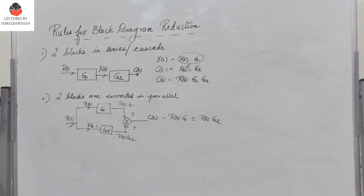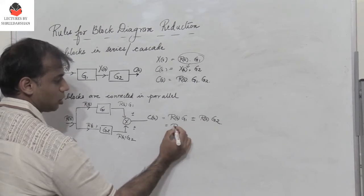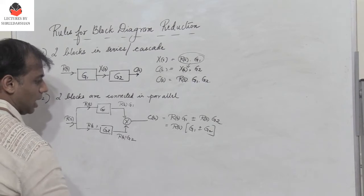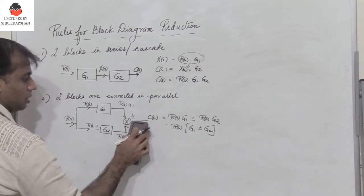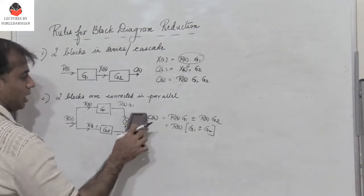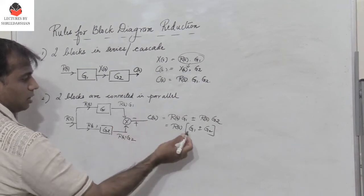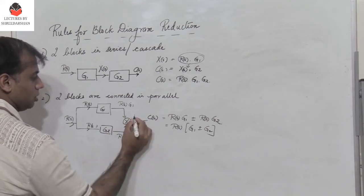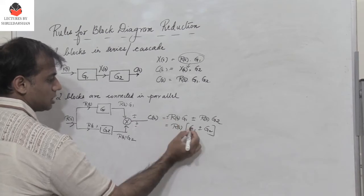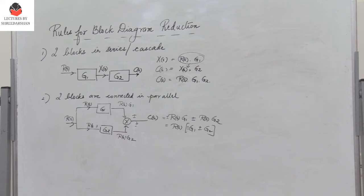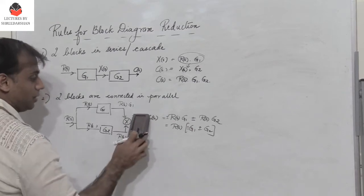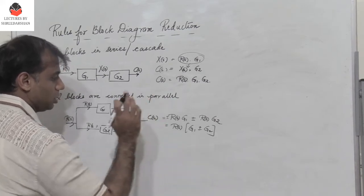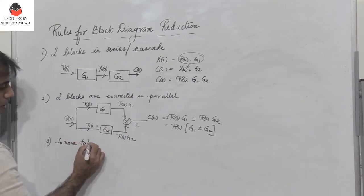Depending on whether you have addition or subtraction, you can take r of s common, giving c of s equals r of s into (g1 plus or minus g2). If added, we get g1 plus g2; if subtracted, g1 minus g2; or minus g1 plus g2 and so on. In general, including a plus or minus sign, it would be g1 plus or minus g2.